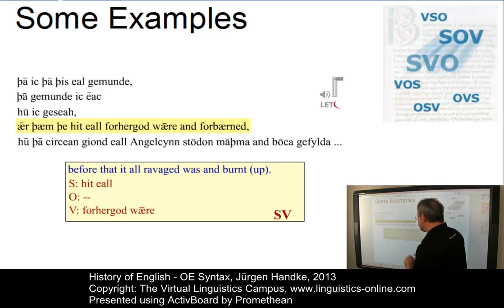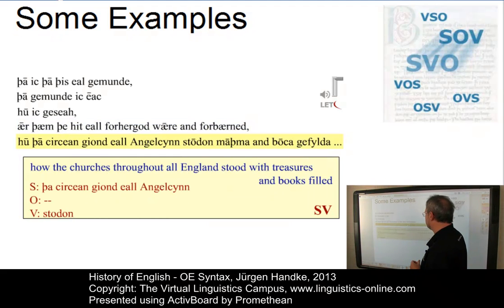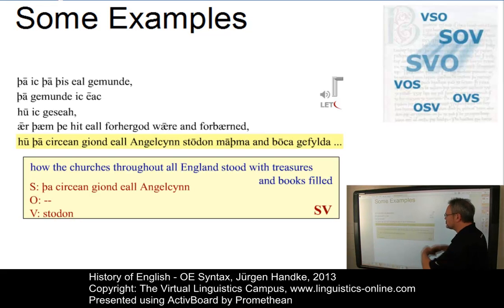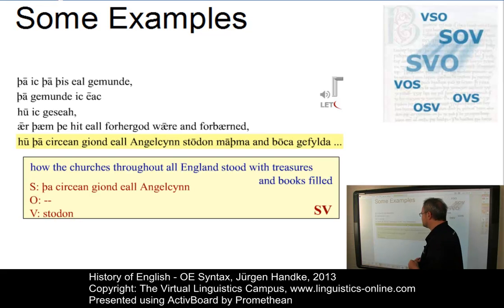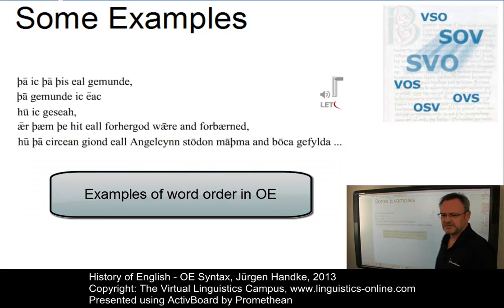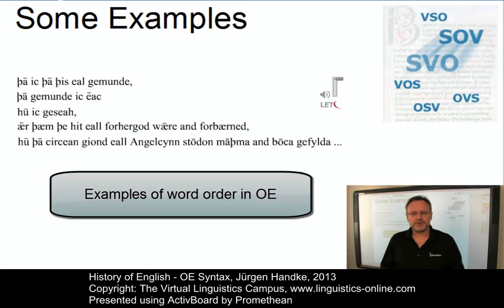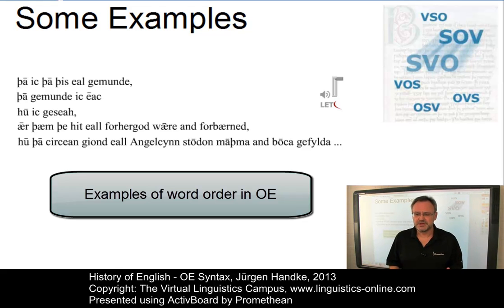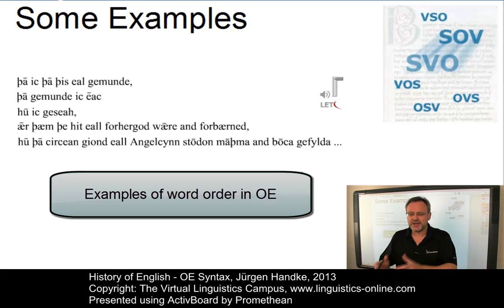The last sentence has an SV structure with the verb at the end. These examples show that the word order in Old English, at least compared with that of present day English, was relatively free. Speakers and writers of Old English had more options than we have today as to where to place the main elements of clause structure — that is, subject, verb, and object.